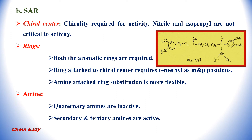Next is the structure activity relationship of verapamil. First point: chiral center. The carbon here in verapamil is a chiral carbon, and this chirality is required for activity. The nitrile and isopropyl groups are not critical to activity. Both aromatic rings are required for activity. The ring attached to the chiral center requires O-methyl substitution — the O-CH3 groups are at meta and para positions. The amine-attached ring substitution is more flexible.